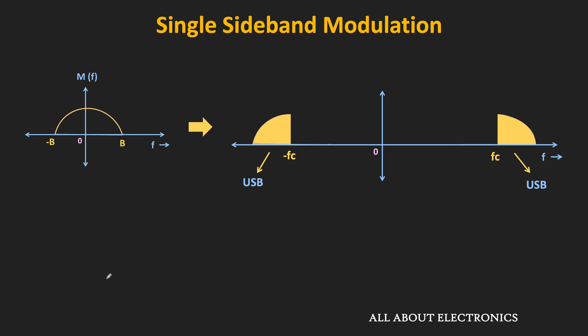In single sideband modulation, since the carrier signal is not transmitted, at the receiver it can be recovered using synchronous demodulation. That means if φ(t) is the modulated signal, then at the receiver, when it is multiplied with cos(ωc·t), the entire spectrum will get shifted by ±fc.